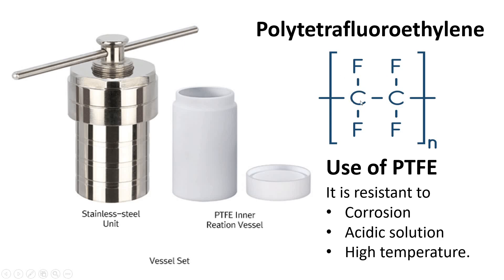Here you can see the structure of this polymer, where there is a carbon-fluorine bond, and this is the repeating unit. There are some specific reasons for the use of this polymer: it is resistant to corrosion, it can work in all types of pH ranges whether acidic or basic, and it can also withstand high temperatures, which are commonly required for this type of synthesis process.